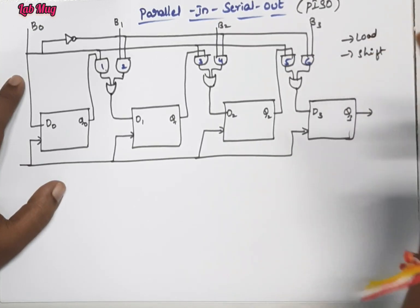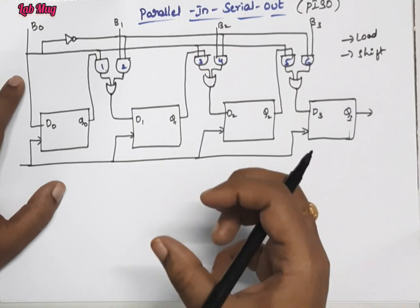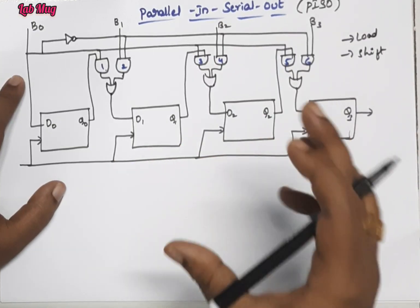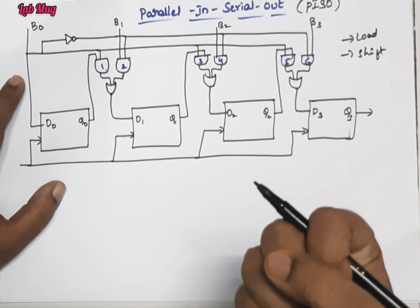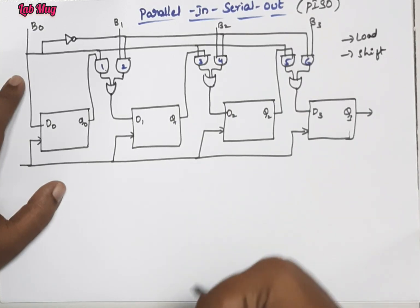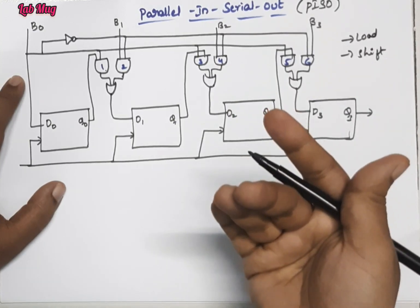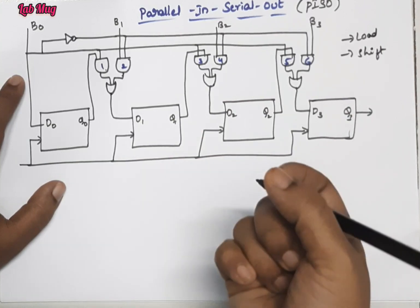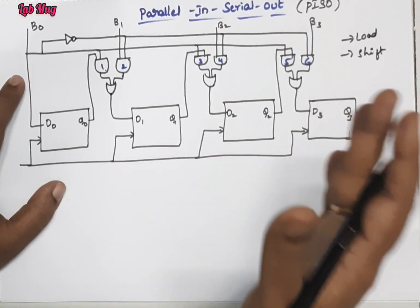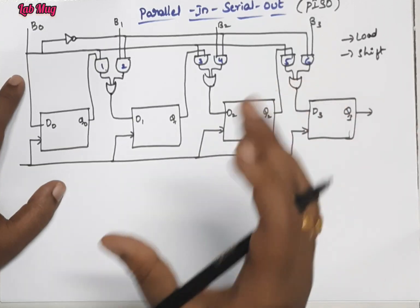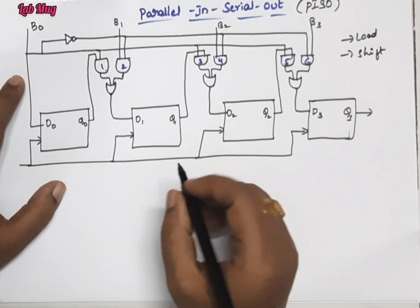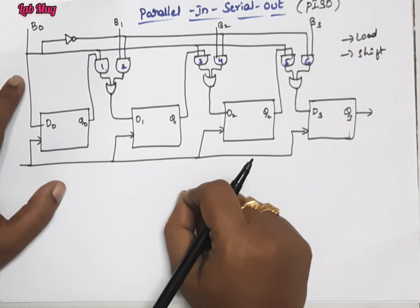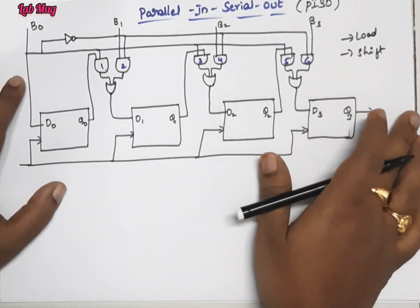In load mode, if the total data input value is the same, we load it into the flip-flops. So first we are getting the outputs with the load mode, then we are shifting the mode — those values we shift as the inputs. Same inputs are shifted. It also stores one bit of data for each flip-flop.